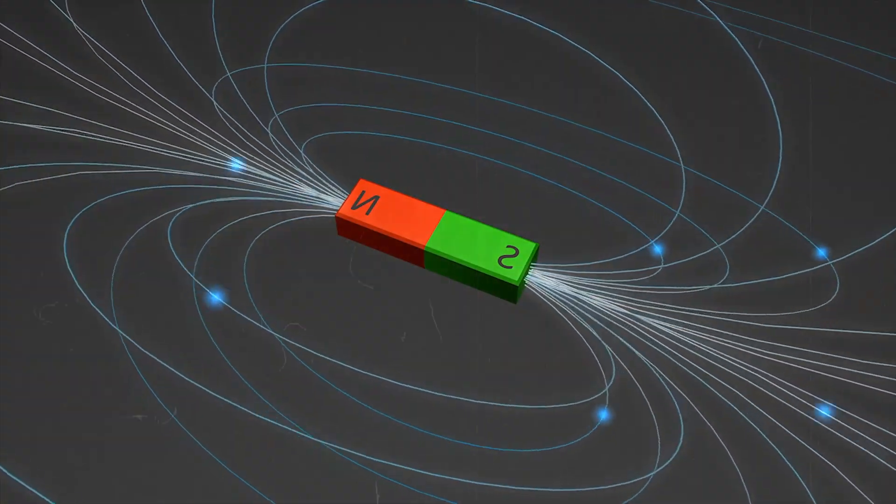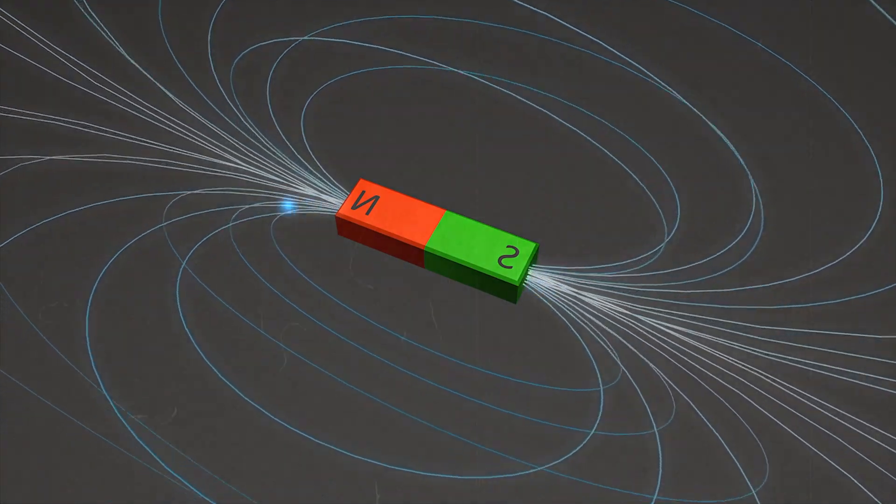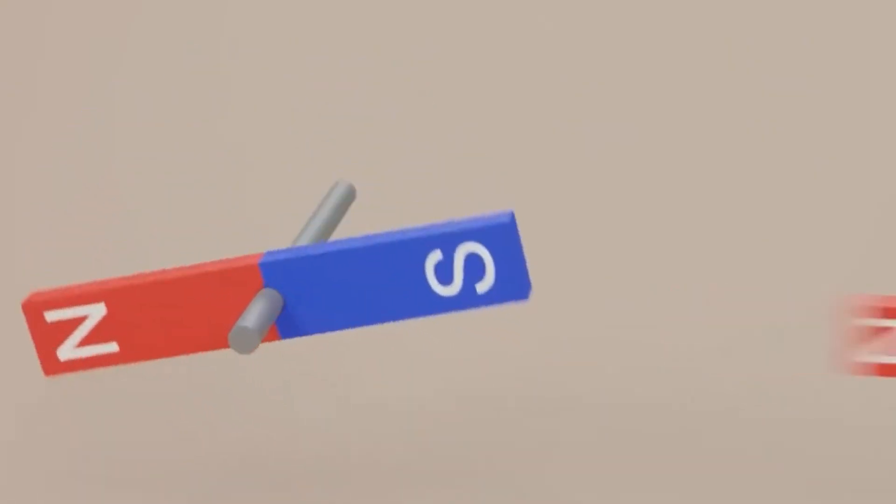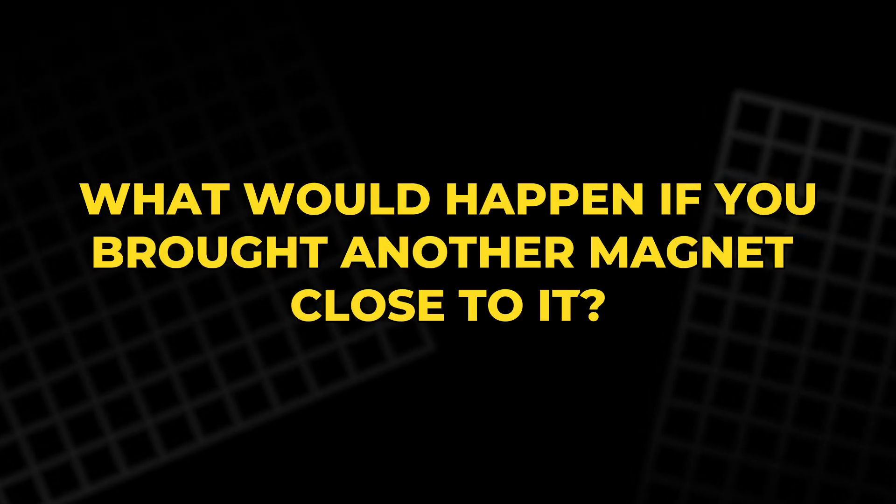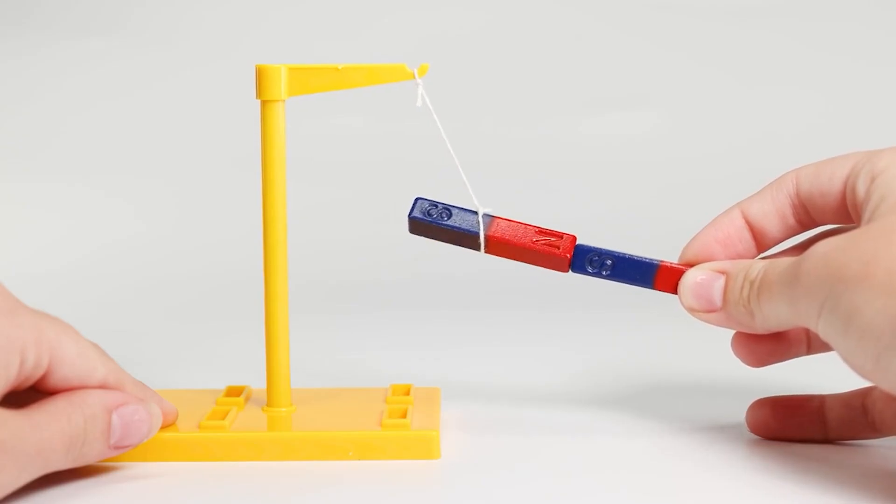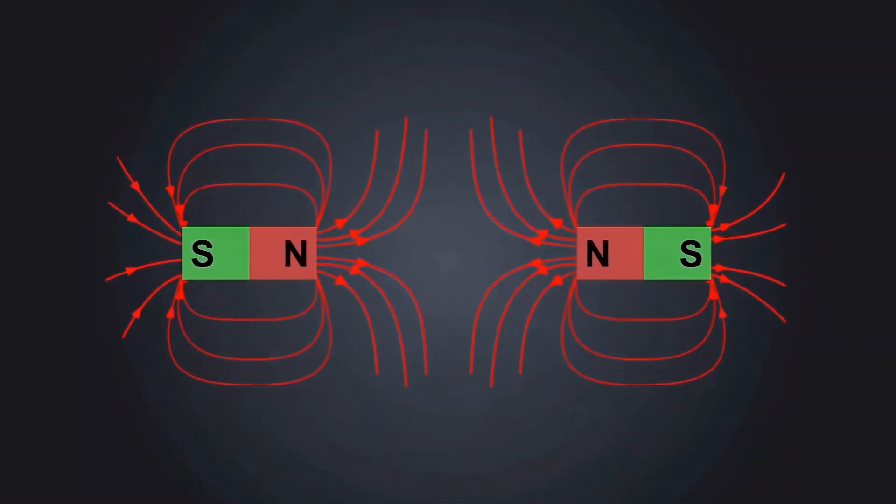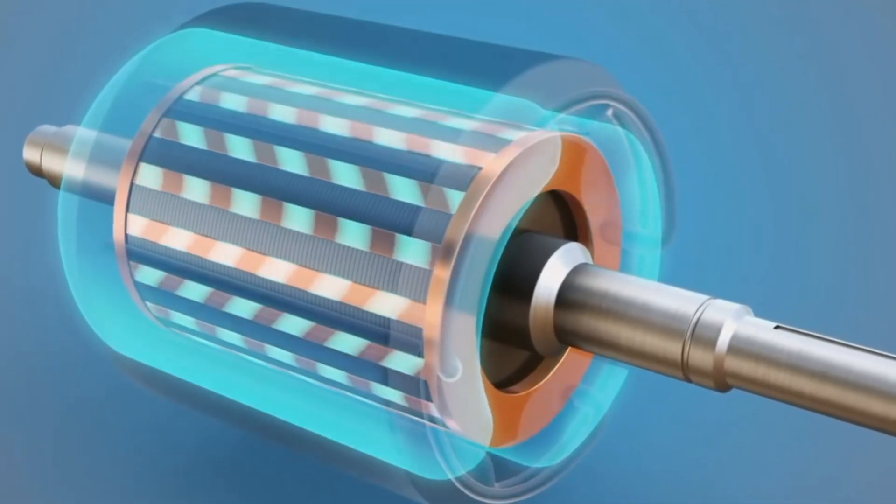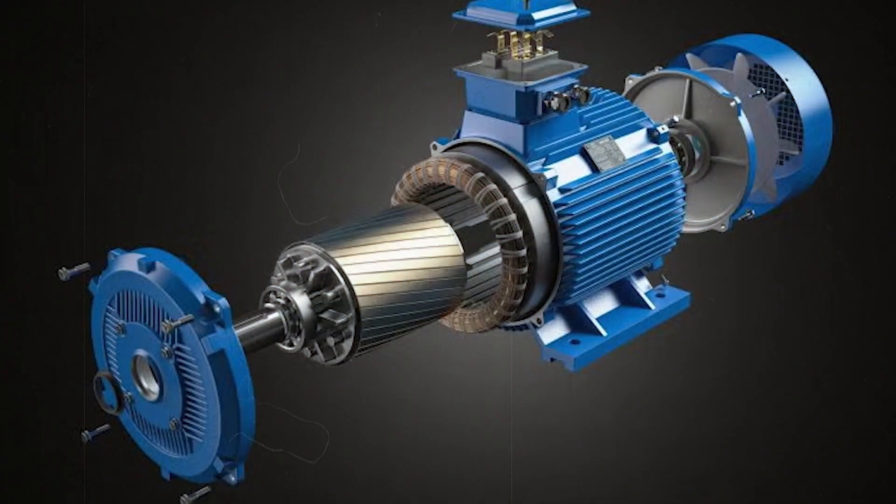Now that we understand the basics of electricity and magnets, let's take it a step further. Imagine a magnet spinning. What would happen if you brought another magnet close to it? If the poles are opposite, they'll attract. And if they're the same, they'll repel. This behavior is the foundation of how electric motors work.